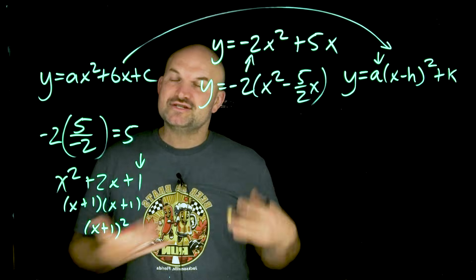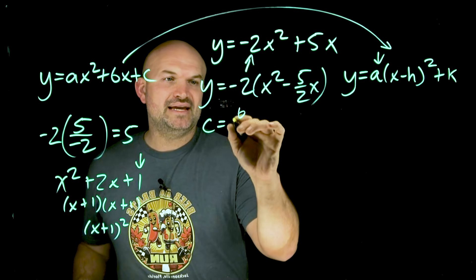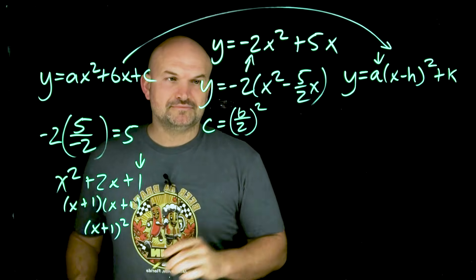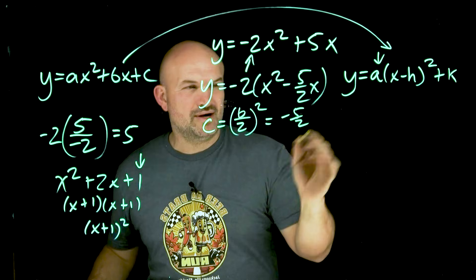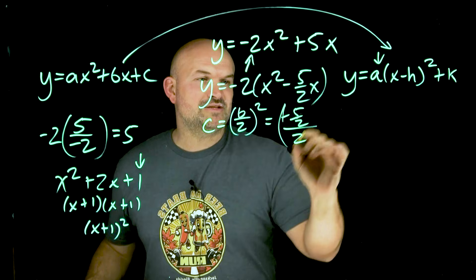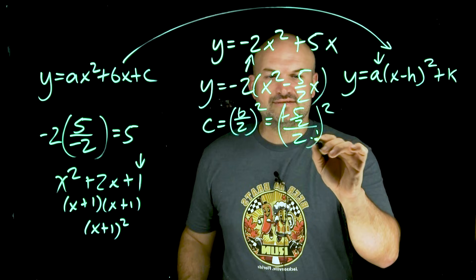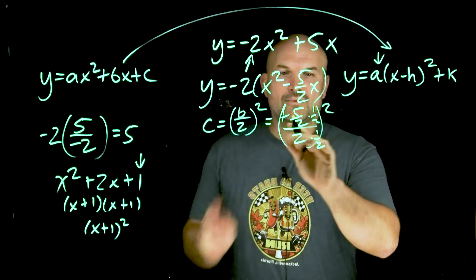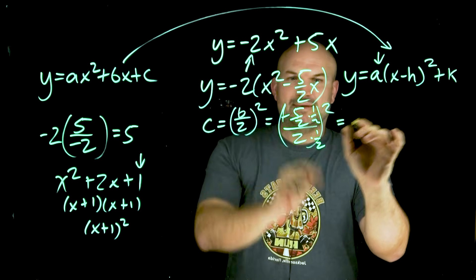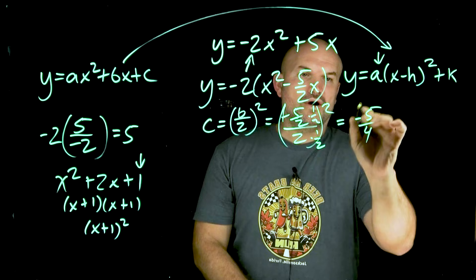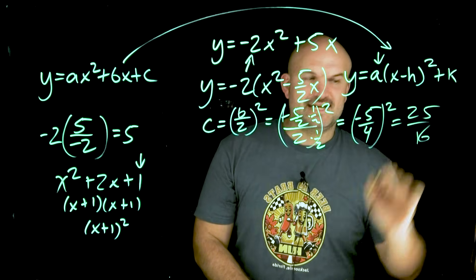Thankfully, there's a formula: c equals the quantity b divided by 2, squared. We take negative 5 halves and compute negative 5 halves divided by 2, squared. Dividing by 2 is the same as multiplying by one half, so the numerator and denominator simplify, leaving us with negative 5 over 4, squared, which gives us 25 over 16. This is the value we're going to plug inside the parentheses.